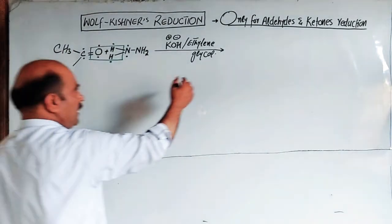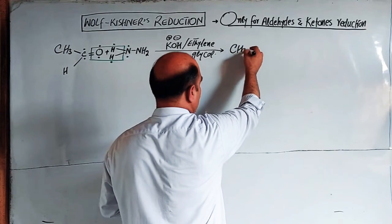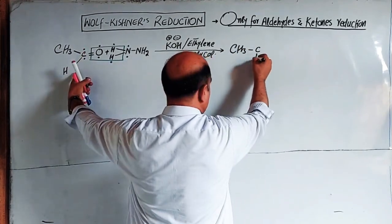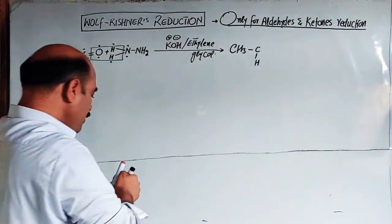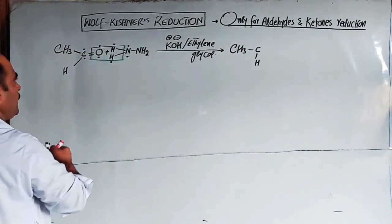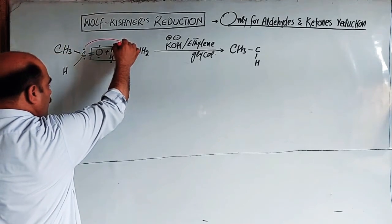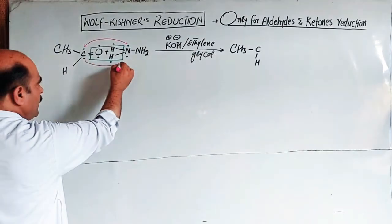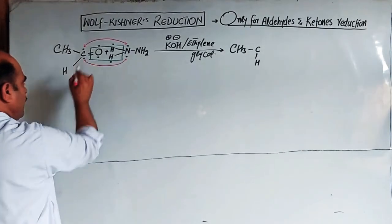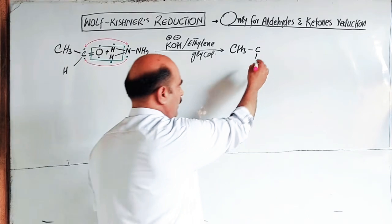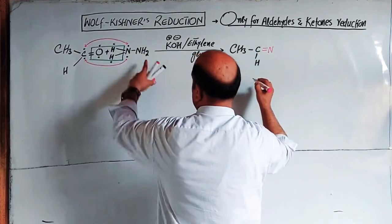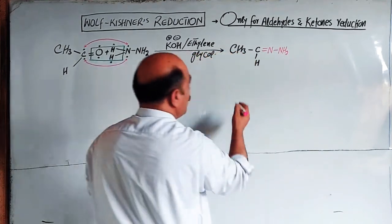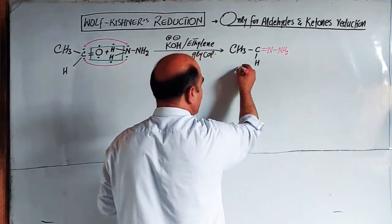The carbon now has CH3 and CH3 groups. Carbon forms a bond with nitrogen, resulting in a carbon-nitrogen double bond. The nitrogen still has an NH2 group attached. This intermediate compound with a carbon-nitrogen double bond (C=N) connected to NH2 is called a hydrazone.